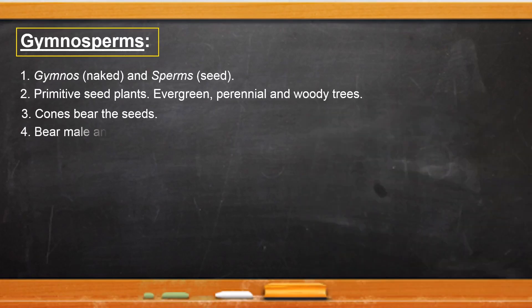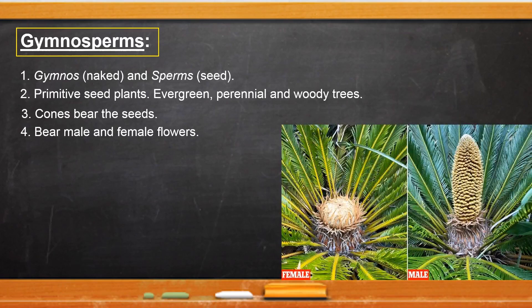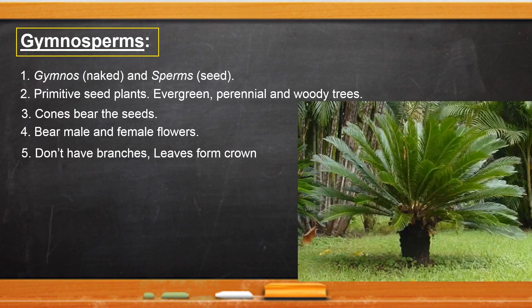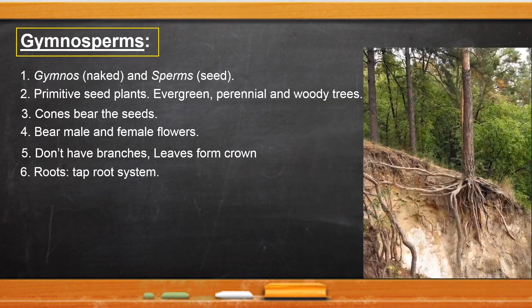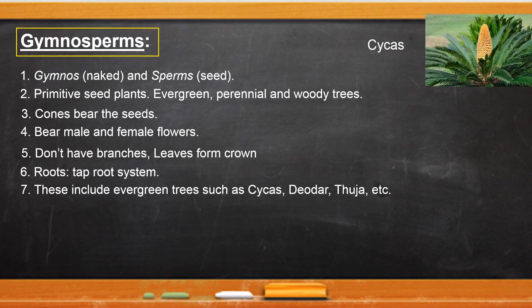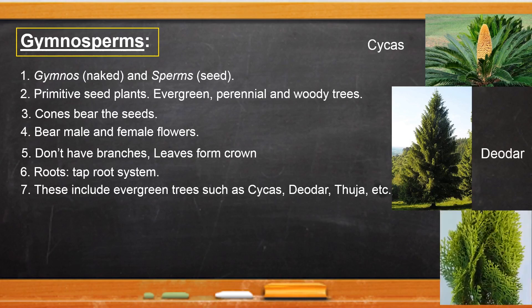All gymnosperms have two types of cone: male and female. Their stems are without branches, leaves form a crown. They have taproot system. Examples of gymnosperms are cycas, devdar, thuja, etc.